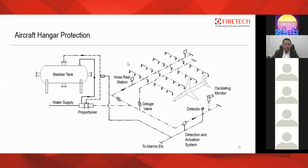The operation philosophy: in case of a fire detected by the UVIR detectors, they send a signal to the alarm panel. The alarm panel then activates the deluge valve at the inlet of the foam proportioner. Deluge valves are also provided downstream for individual systems — the foam sprinkler has one deluge valve, the hose reel station has one, and the oscillating monitor has one. These deluge valves can be programmed to operate simultaneously so the whole aircraft hangar can be flooded with foam.